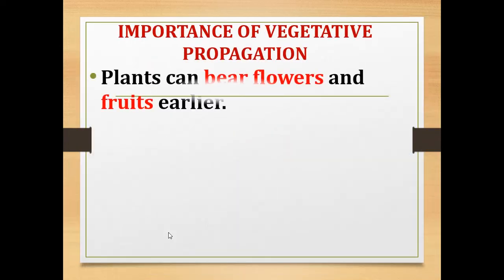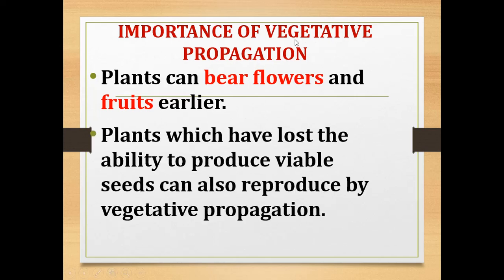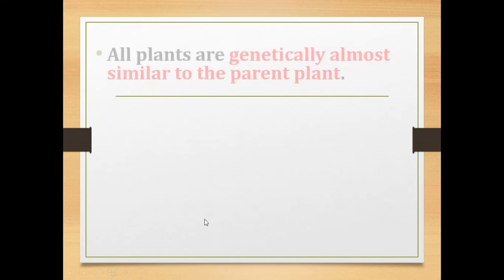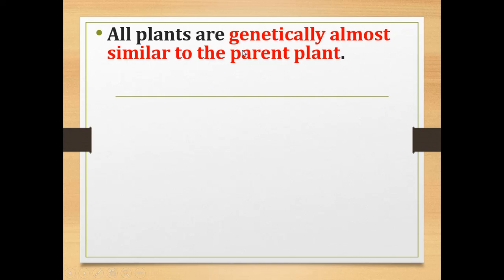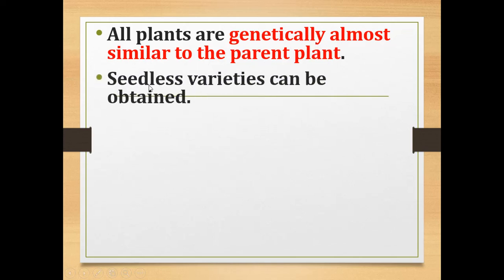Now, the importance of vegetative propagation: by the help of vegetative propagation, plants can bear flowers and fruits earlier. Plants which have lost the ability to produce seeds can also reproduce by vegetative propagation. All plants produced by vegetative propagation are genetically similar to the parent plant.